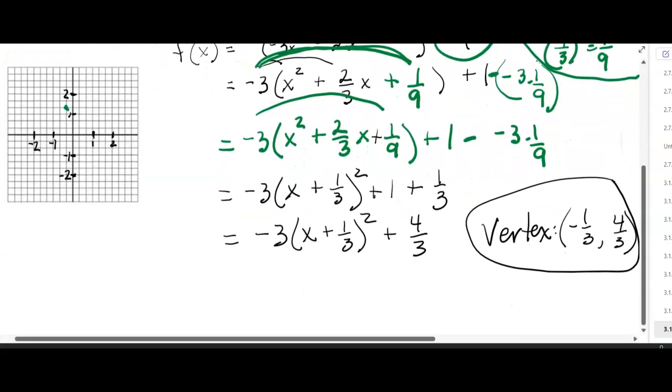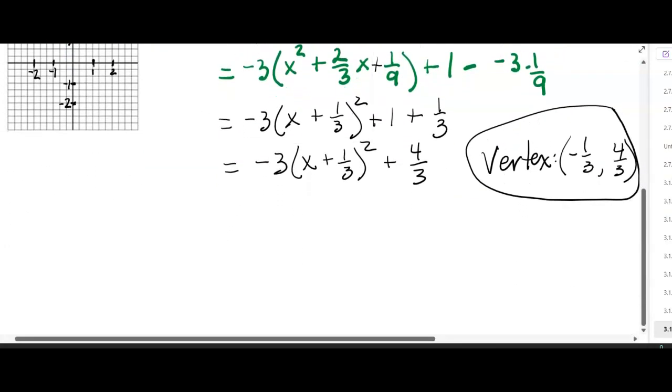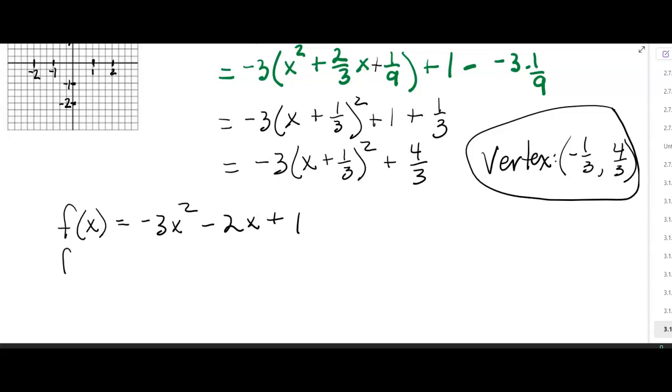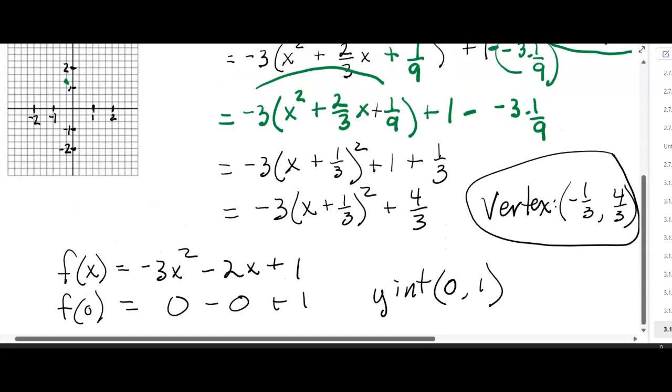We're going to go back to the equation then that they gave us. And we're going to say f of x equals negative 3x squared minus 2x plus 1. To find the y-intercept, you just plug in 0 for x. So plug in 0, input of 0. That's going to be 0, that's going to be 0. So you're going to get the y-intercept at 0 comma 1. That'll be easy enough to graph. So we'll graph that. 0, 1, it's going to be right there.